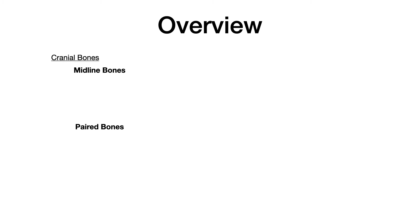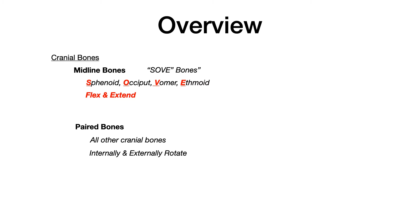Let's talk about different types of cranial bones. We separate them into midline bones and paired bones. The way to memorize the midline bones is the SOVE mnemonic: S for sphenoid, O for occiput, V for vomer, and E for ethmoid — your SOVE bones. Your paired bones are any other cranial bone by process of elimination.